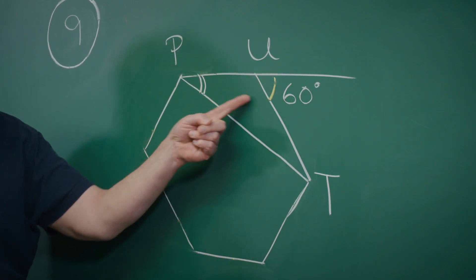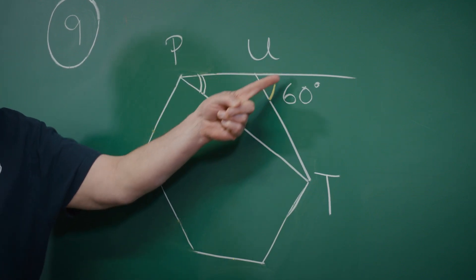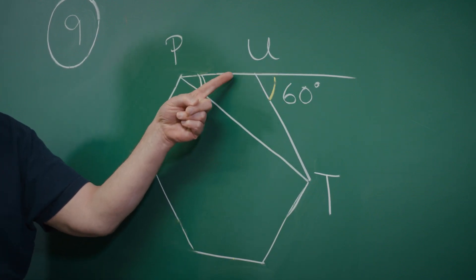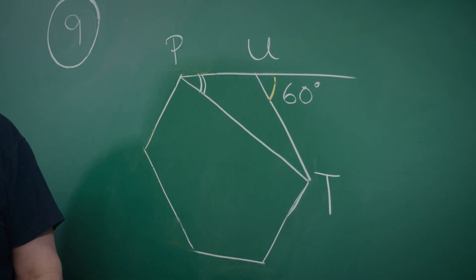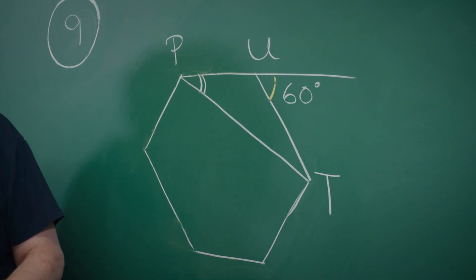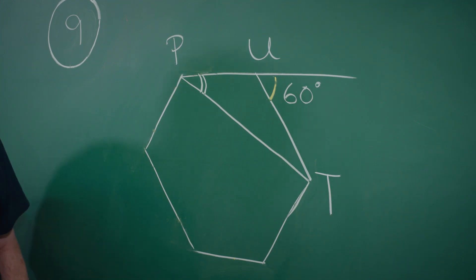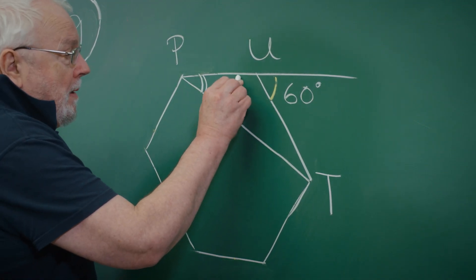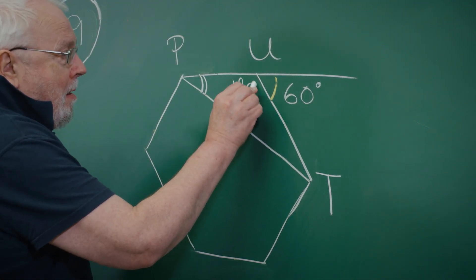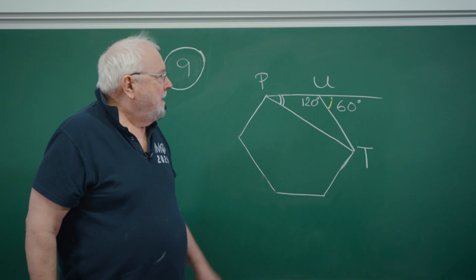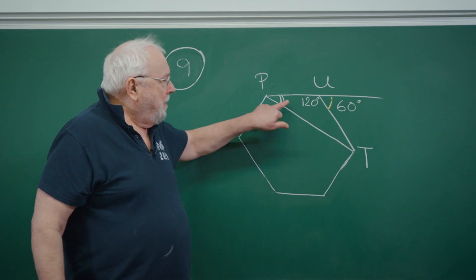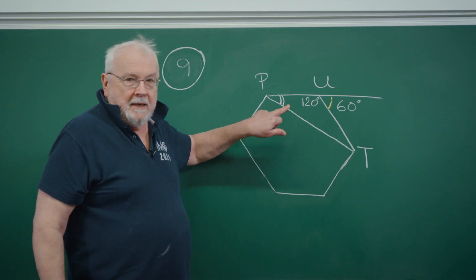We have a whole straight line here, so those two angles — this one and this one — have to add up to 180. One of them is 60, so the other one must be 120. Not quite what we want, but getting closer.